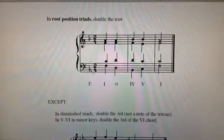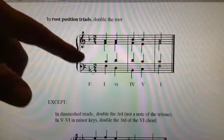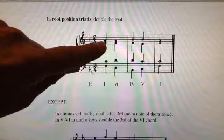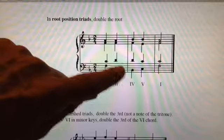This next rule, in root position triads, generally double the root. So you see here in the key of F, you have this one chord F, they've doubled that there. You have the minor six, and they have doubled that there, and so on and so forth. It's just a stronger thing.